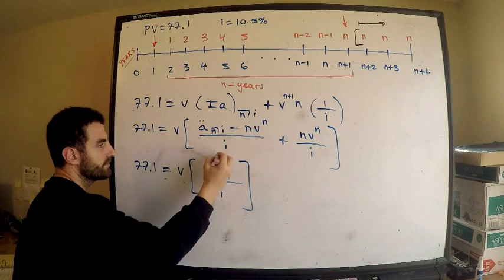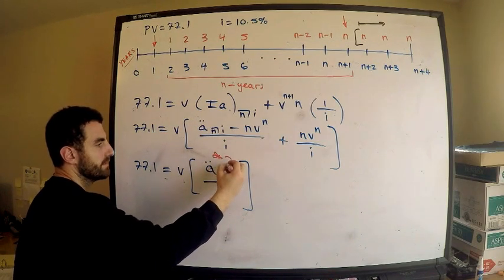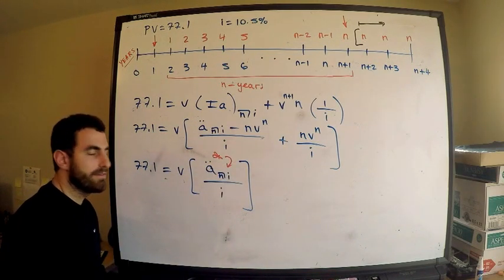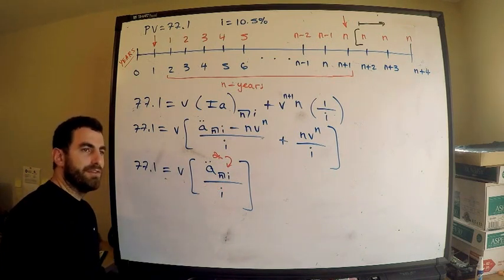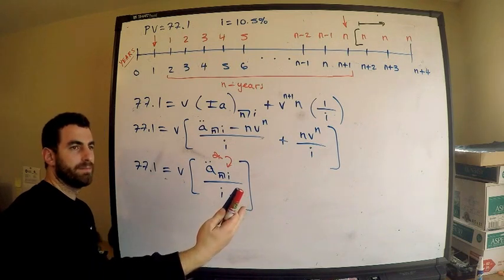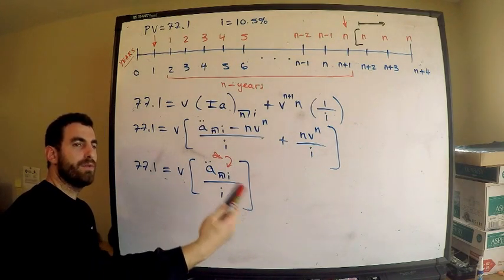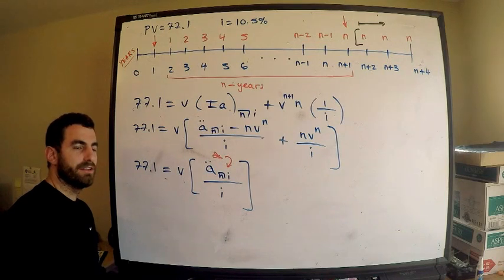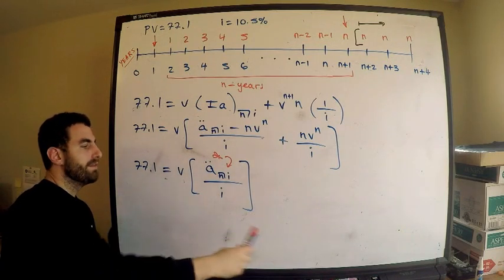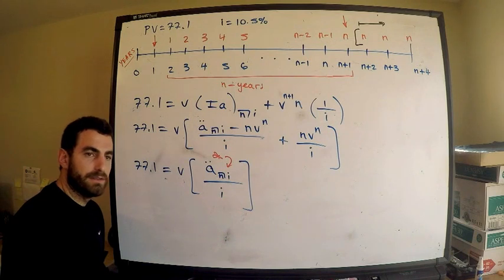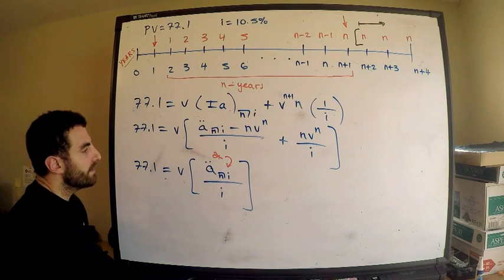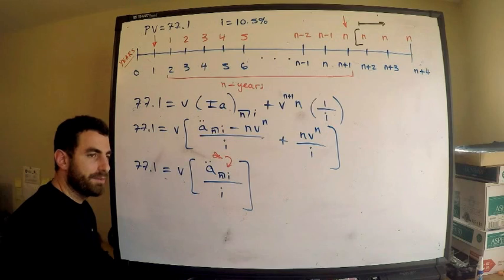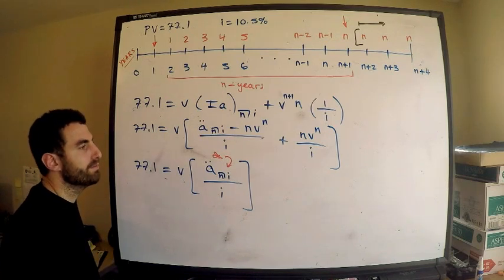I'm putting a star right here — this is an important formula to know for Exam FM. What this does: if you have an increasing annuity with payments increasing by one each year, and at some point the payments level off into a perpetuity immediate, this formula gives you the present value directly.